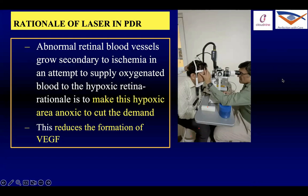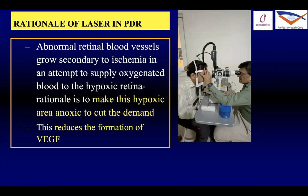The rationale of lasers in proliferative diabetic retinopathy is to convert a hypoxic retina to an anoxic retina, which reduces the formation of vascular endothelial growth factor. To achieve that, one could use a slit lamp delivery system or an indirect laser ophthalmoscope.